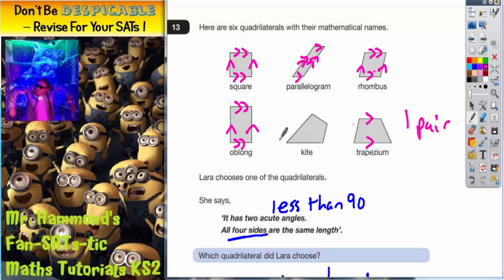But the kite does not have any pairs of parallel lines. If you check with a pair of rulers to see if when these lines are extended, you can see that those lines actually go towards each other. If they go towards each other, they can't be parallel lines. So the kite doesn't have any parallel lines.